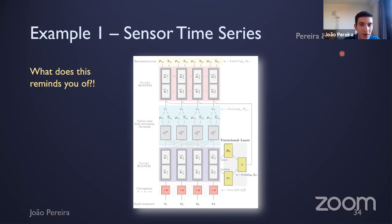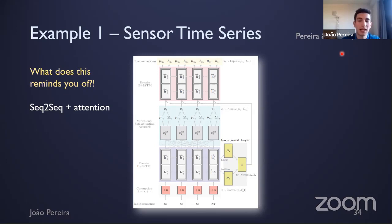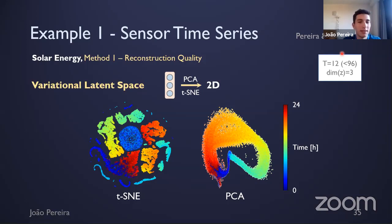For those familiar with NLP, this model is analogous to a sequence-to-sequence model with an attention mechanism, but it's a special case where the output sequence equals the input sequence — essentially a variational sequence-to-sequence autoencoder. Now let's look at the results on the solar energy dataset, where we used the reconstruction-score-based detection strategy. I show the latent representations projected into 2D space using PCA and another technique.